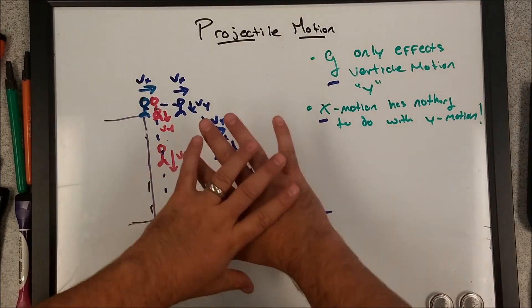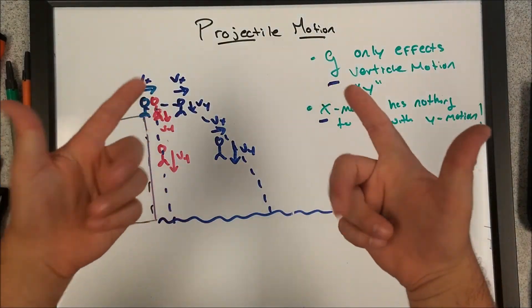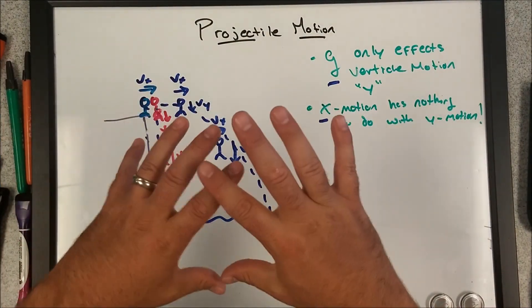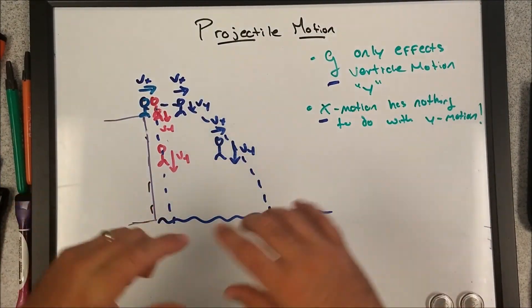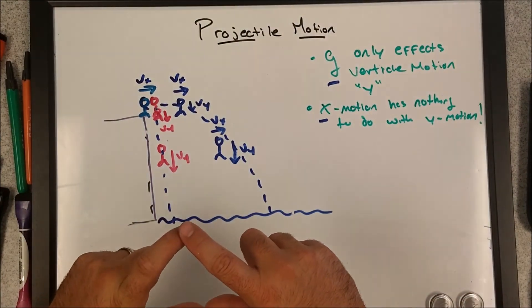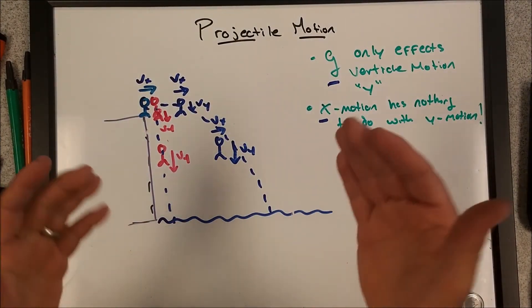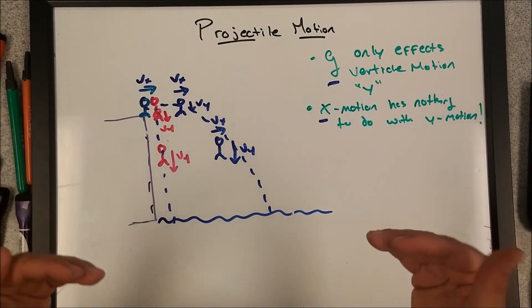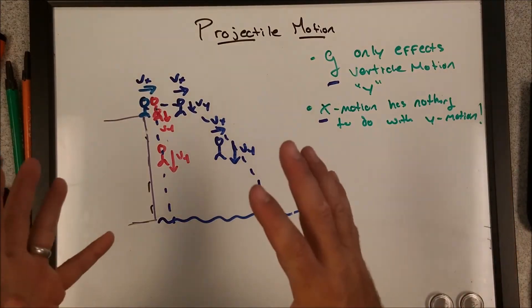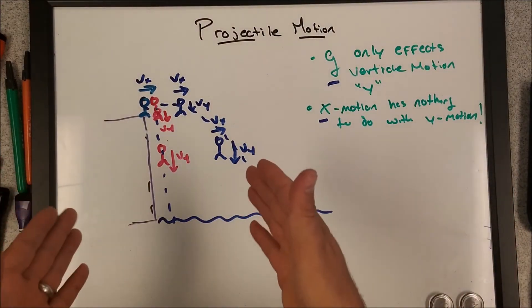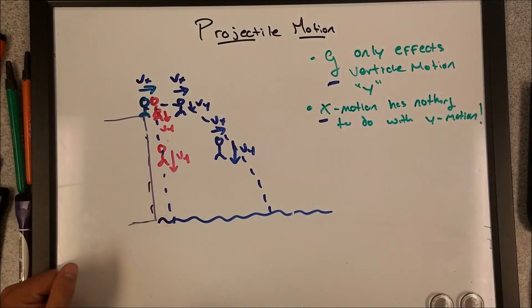I'm going to end this video here. This is the basics of projectile motion. I'm going to do another video dealing with just horizontal, and another video with just angled. The horizontal one, I'm going to incorporate the breakdown of the vertical motion within it, so you can see this example in numbers. Thank you.